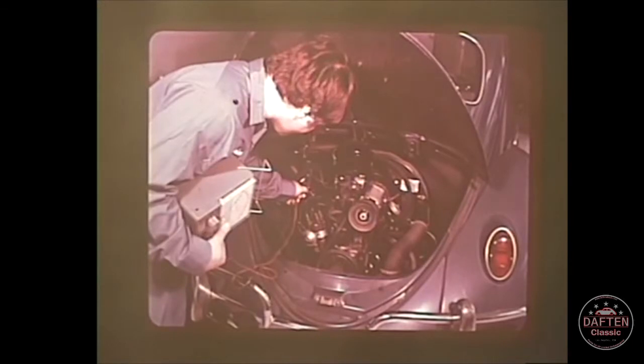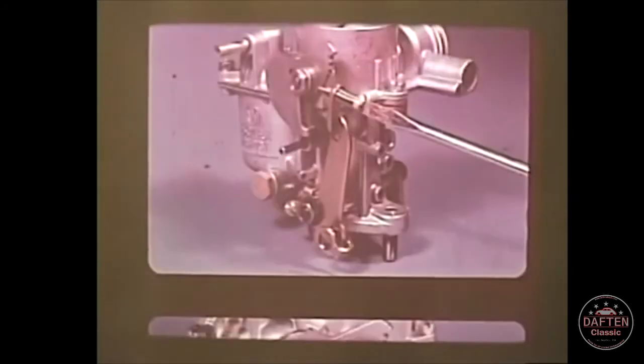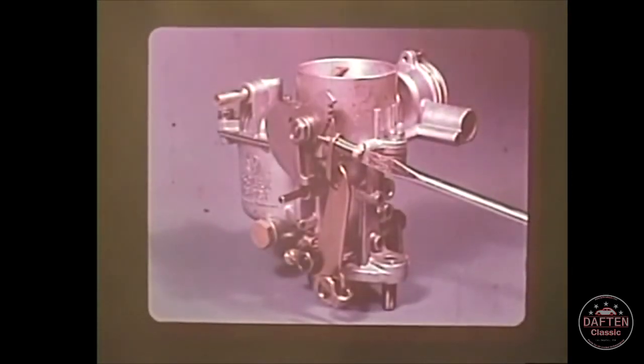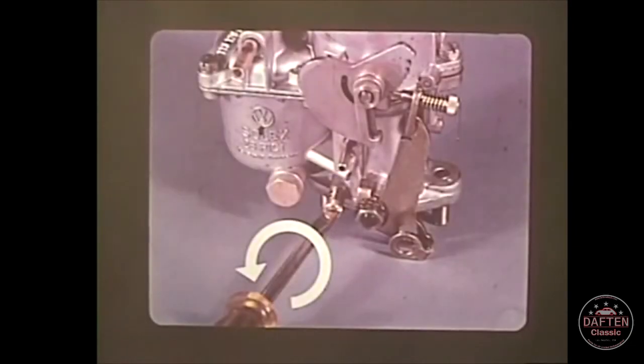A tachometer must first be attached to the engine before correct adjustment can be made. Turn the idle adjusting screw in or out until the idle RPM is correct according to the tachometer. Then adjust the volume control screw, turning it in slowly until the engine speed starts to drop. Then turn it out between a quarter and a half turn until the engine runs smoothly.